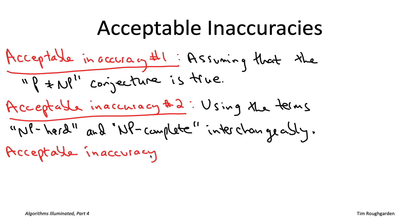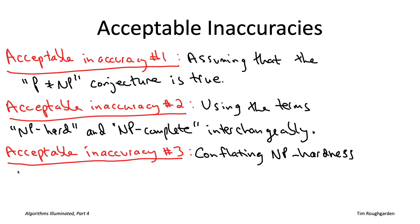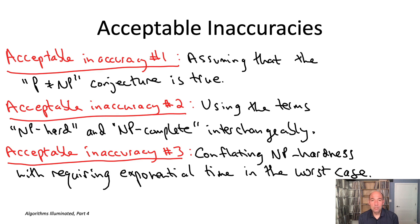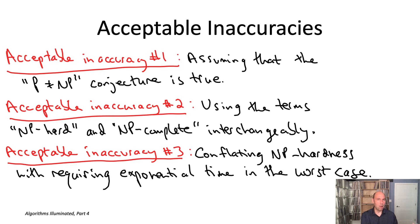The final acceptable inaccuracy is to equate NP-hardness with requiring exponential time to solve in the worst case — basically the oversimplified summary I gave when first introducing the term. There are some subtleties this overlooks: some problems can't even be solved in exponential time, like the halting problem, and some problems seem intermediate — too hard to be polynomial-time solvable but too easy to be NP-hard, like factoring large integers. But day-to-day, computer scientists do more or less equate NP-hardness with worst-case exponential time.